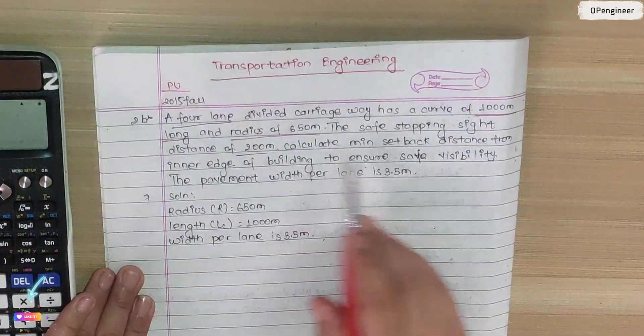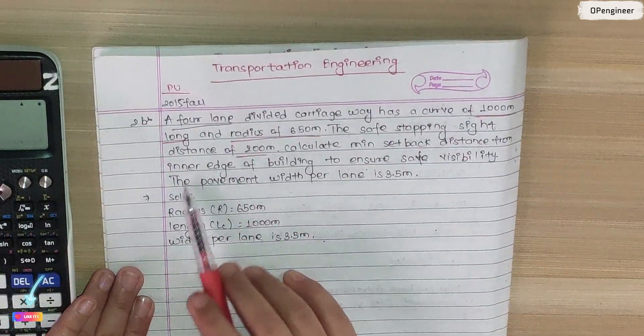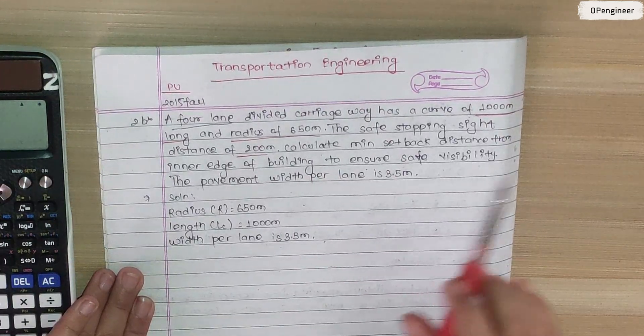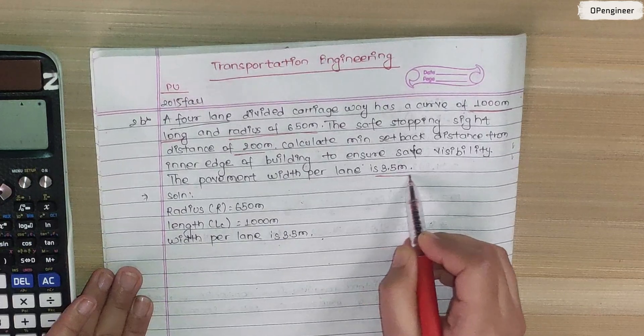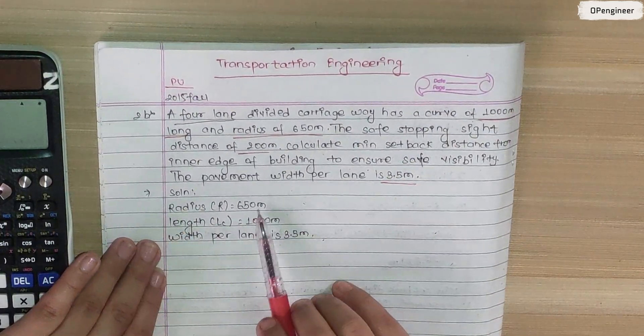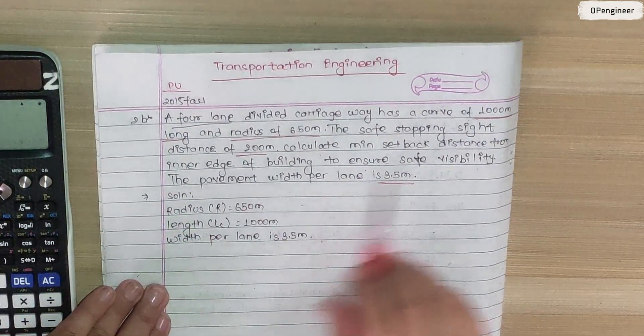The safe stopping sight distance is 200 meter. Calculate the minimum setback distance from the inner edge of the building to ensure safe visibility. The pavement width per lane is 3.5 meter.